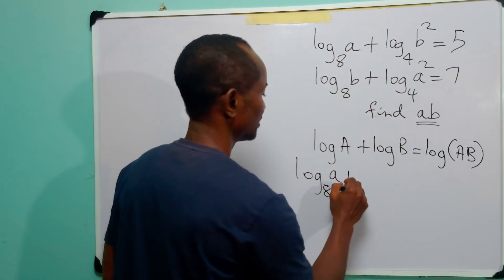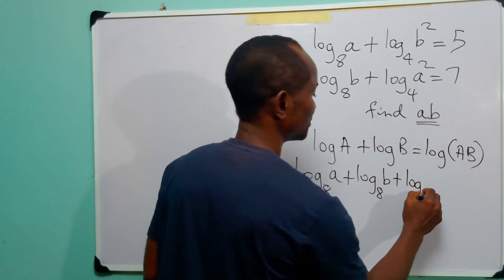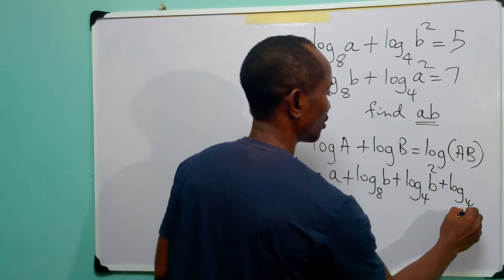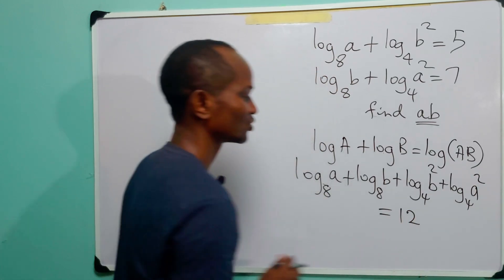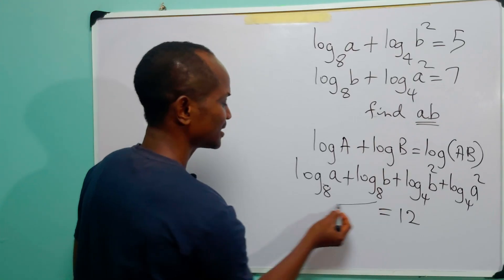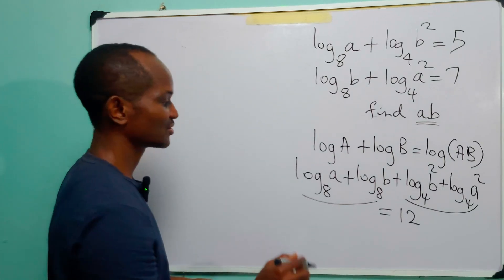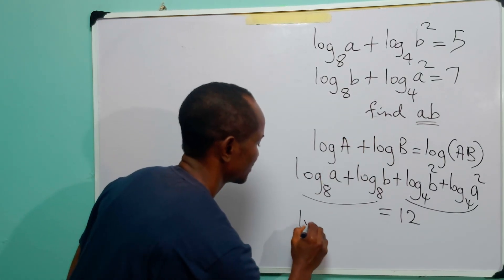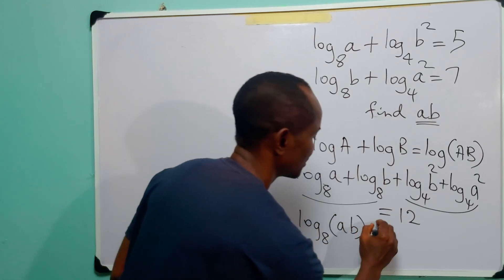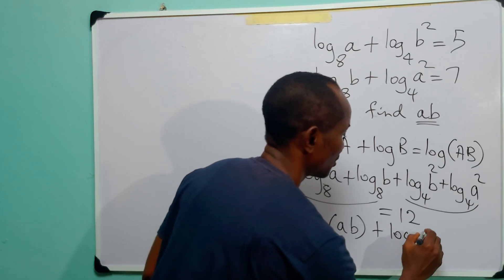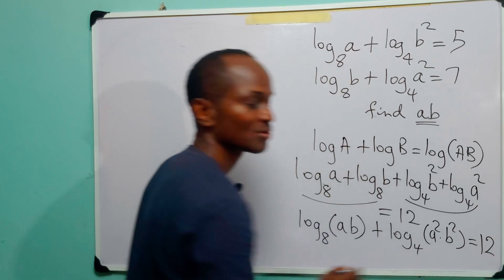So we have log base 8 of a plus log base 8 of b, plus log base 4 of b squared plus log base 4 of a squared, is equal to 12. We can combine the base-8 terms and combine the base-4 terms to get log base 8 of (a times b) plus log base 4 of (a squared times b squared) is equal to 12.